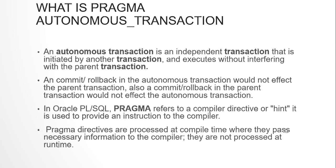What are Pragma Autonomous Transactions? An autonomous transaction is an independent transaction that is initiated by other transactions and executes without interfering with the parent transaction. It is started or called by a parent transaction, but it doesn't commit or roll back when the parent transaction commits or rolls back. It's a transaction within a transaction, independent of the parent. The parent transaction might commit or roll back, but this will not affect the autonomous transaction — the autonomous transaction has its own commit or rollback.